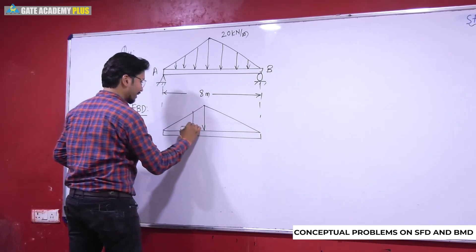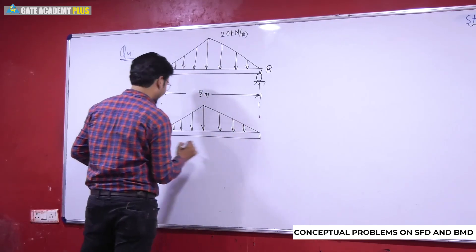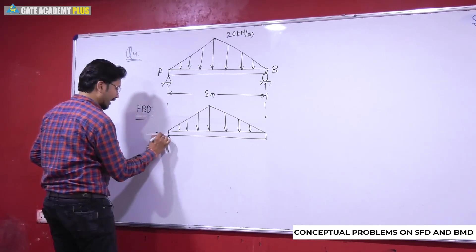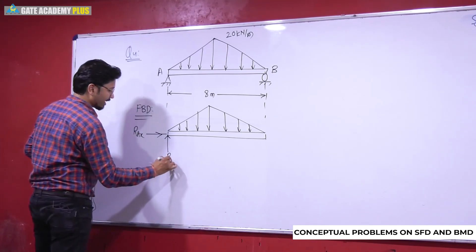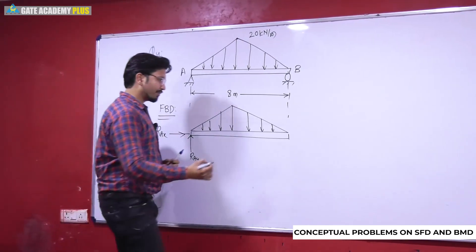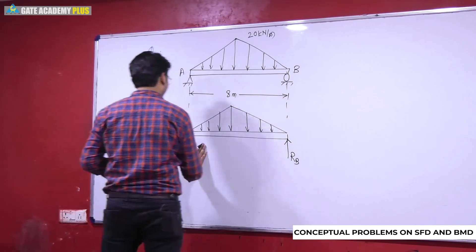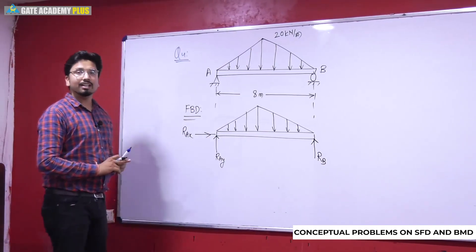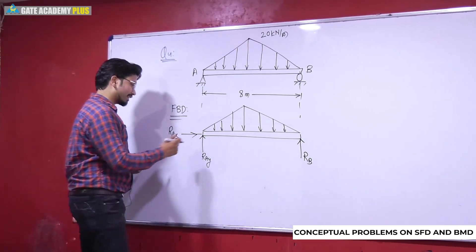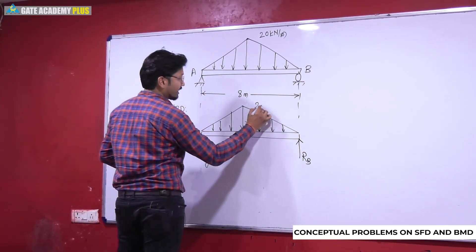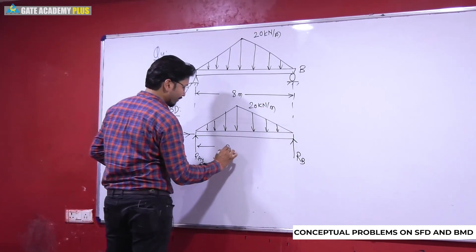Free body diagram complete हो जाएगा। Triangular load draw कर दिया। Hinge support है तो by default दो reactions show करने हैं — this is R_Ax and this is R_Ay। Roller support की तरफ R_B आएगा। Hinge support में दो directions में reactions आते हैं — y direction और x direction में।